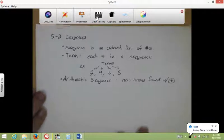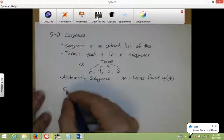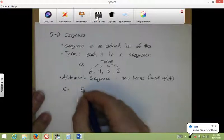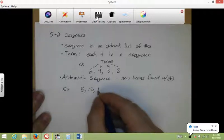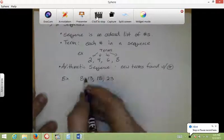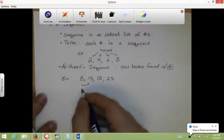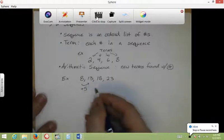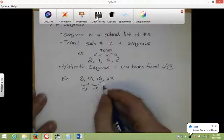So an example of that would be say we had 8, 13, 18, 23. Let's say this was the sequence we have. So to go from this term to this term, I'm adding what? 5. To go from here to here, I'm adding 5. Noticing a pattern? Here to here, adding 5.